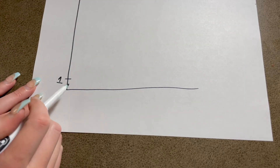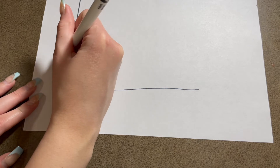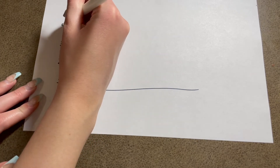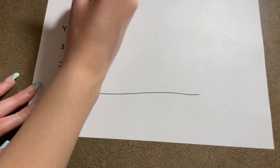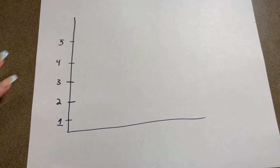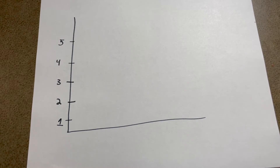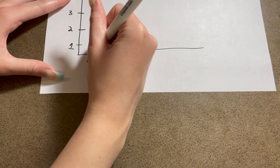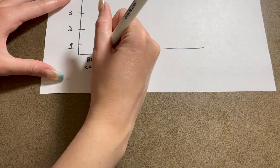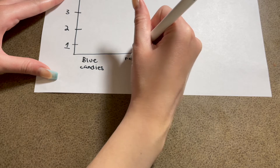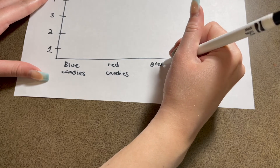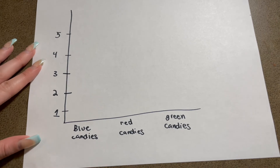I'll write one, then two, go up a little more, write three — and I'm going to draw a line so you can move over from the bar to see how many it is — then four, and five. So now I have one through five on the side of my graph. Now go to the bottom horizontal line and write the different groups spaced out: blue candies, then red candies, and the last one is green candies. When you're done it should look something like this.